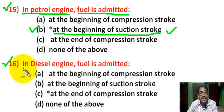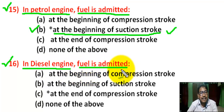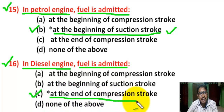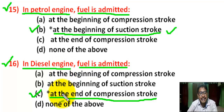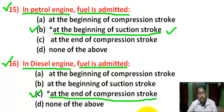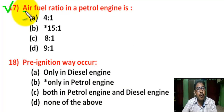Question number 16: In a diesel engine, fuel is admitted — there are four options. Correct answer is C — at the end of the compression stroke. In a diesel engine, the fuel is injected at very high pressure into the compressed hot air at the end of the compression stroke.